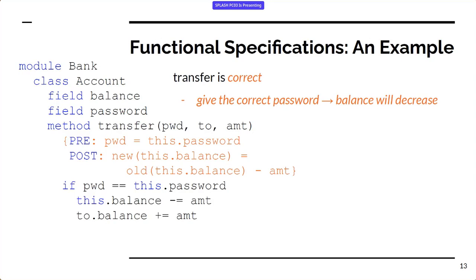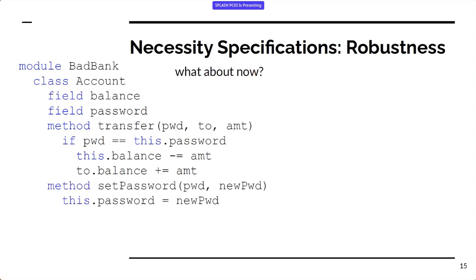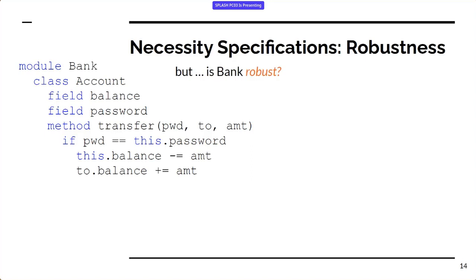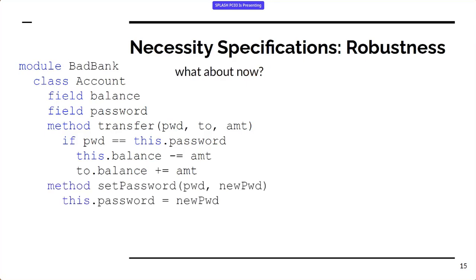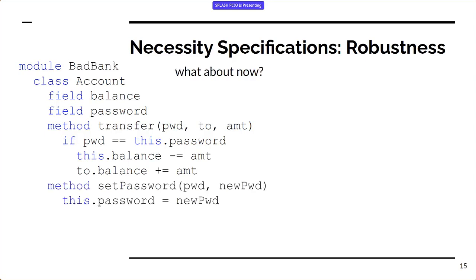If we wanted to write a correctness specification for this — using some syntax I've made up for this talk — we might say: here's a precondition, if you give the right password, then it will reduce the balance by the amount you specify. So it's correct, and this is a valuable thing to know. But the question we would ask is: is it robust? Is there some way to illicitly steal our money? Specifically, if you don't know the password, if you aren't me, can you take my money?